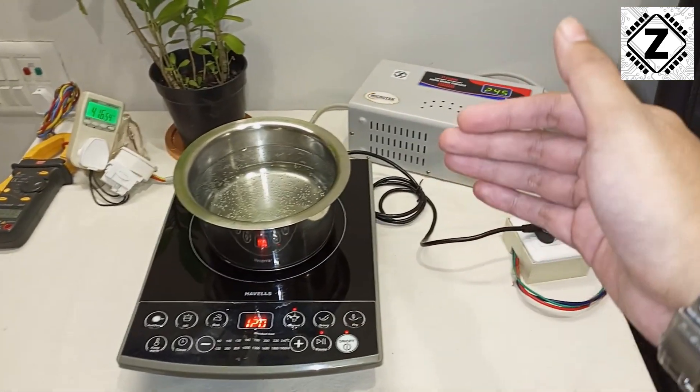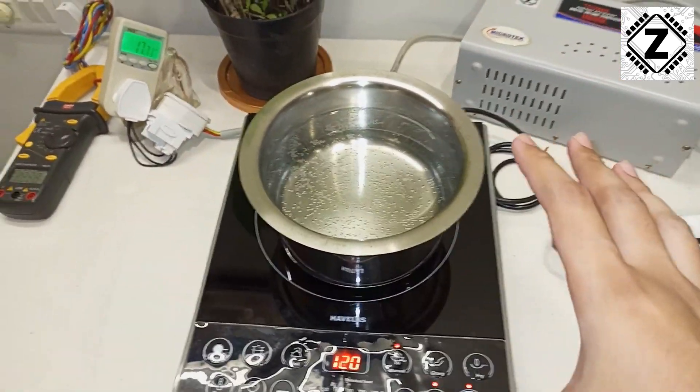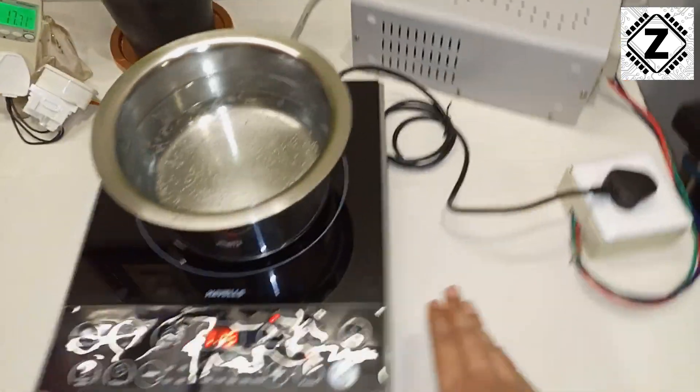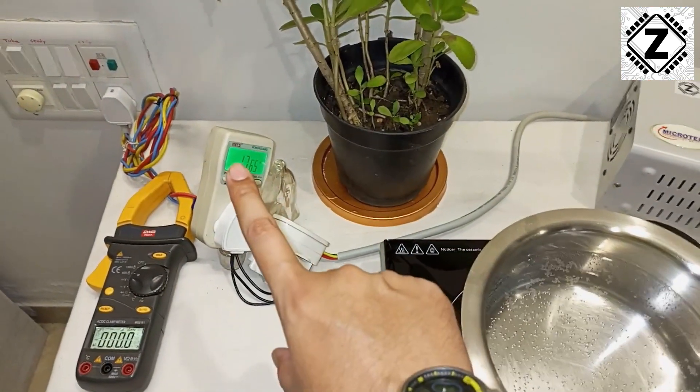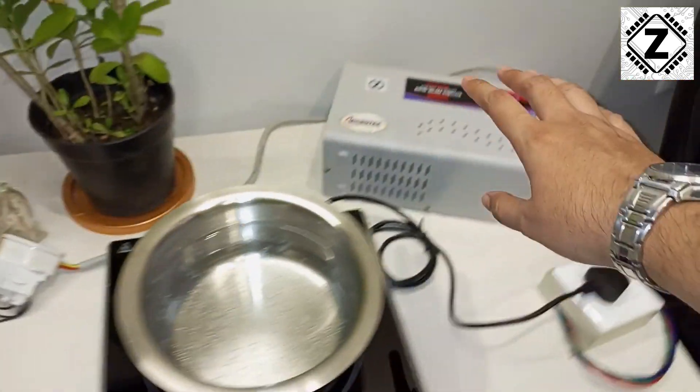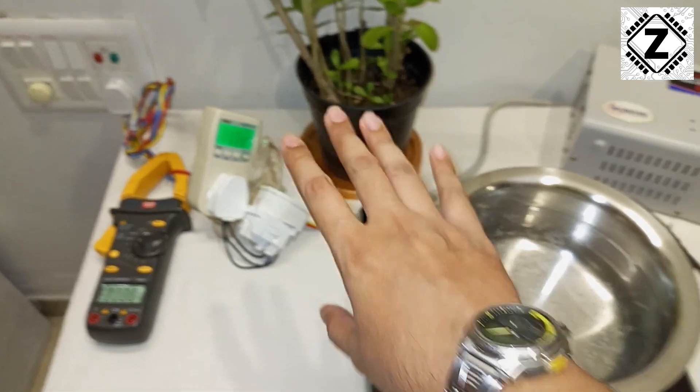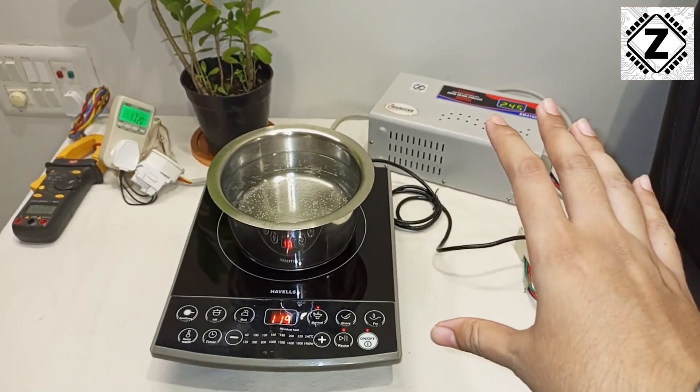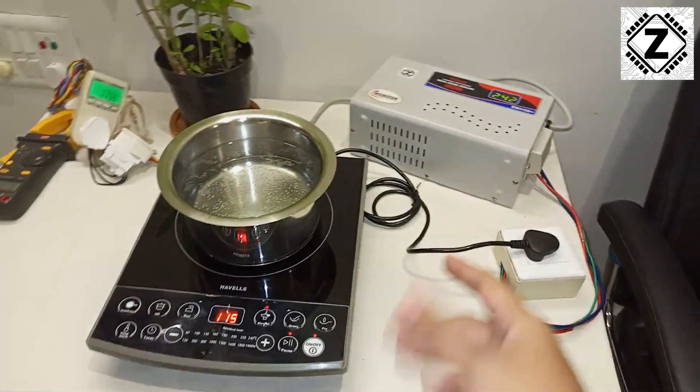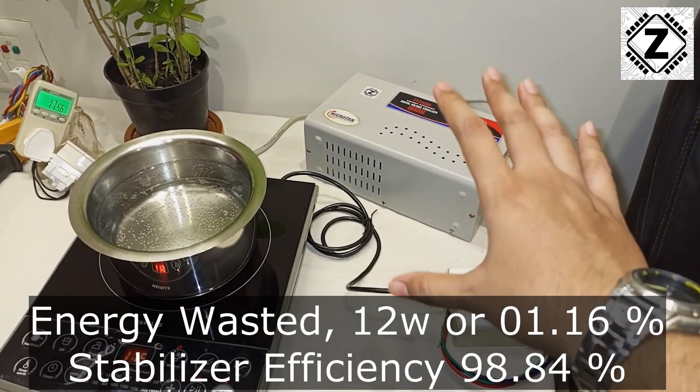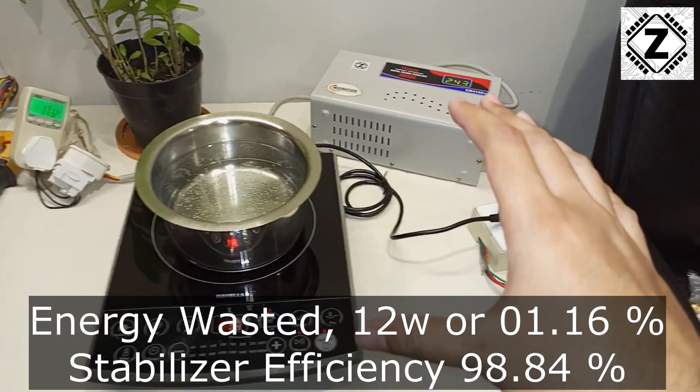This is the wattage consumption - 1226. Let me pause this and we can talk. This test has really surprised me, and the efficiency of the stabilizer is beyond my expectations. Here what we are currently seeing is that without the presence of the stabilizer, the consumption of this induction cooktop on the same settings was somewhere around 1206 watts. After putting this guy in between, the consumption we saw was 1221.